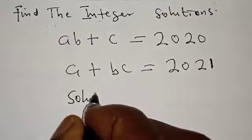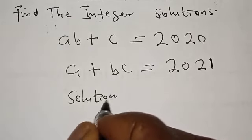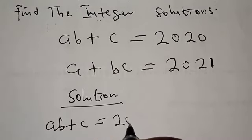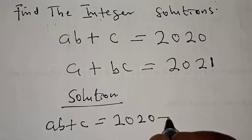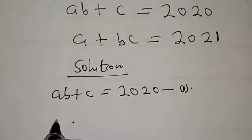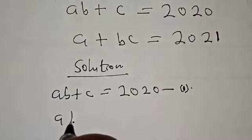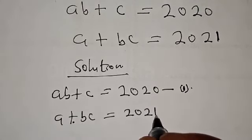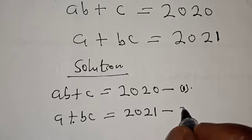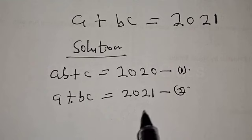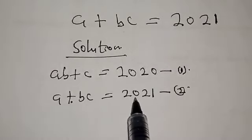Solution. We have AB plus C equal to 2020 — let's call this equation 1. Then we have A plus BC equal to 2021 — let's call this equation 2. What do we do next? Let's subtract equation 2 from equation 1.